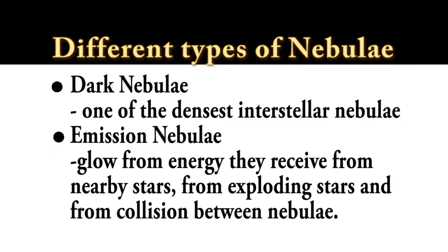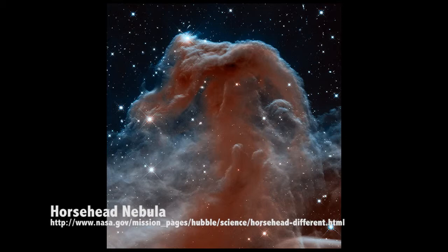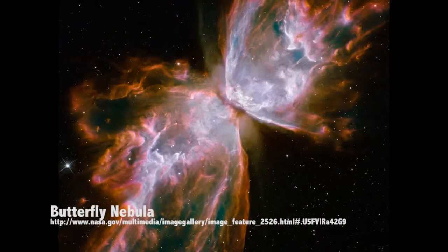Astronomers have found the gas and dust of many dead stars scattered across the sky, and these supernova remnants are another type of nebulae. Nebulae are often named after the shapes these giant clouds resemble. For example, the Horsehead Nebula is part of the Orion Molecular Cloud, located about 1,500 light years away in the constellation of Orion. Astronomers have used NASA's Hubble Space Telescope to photograph the iconic Horsehead Nebula in infrared light. Another example is the Butterfly Nebula.